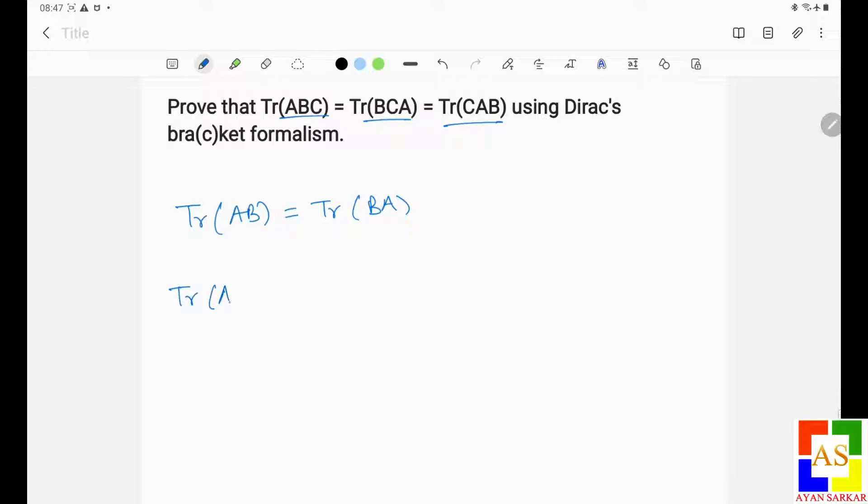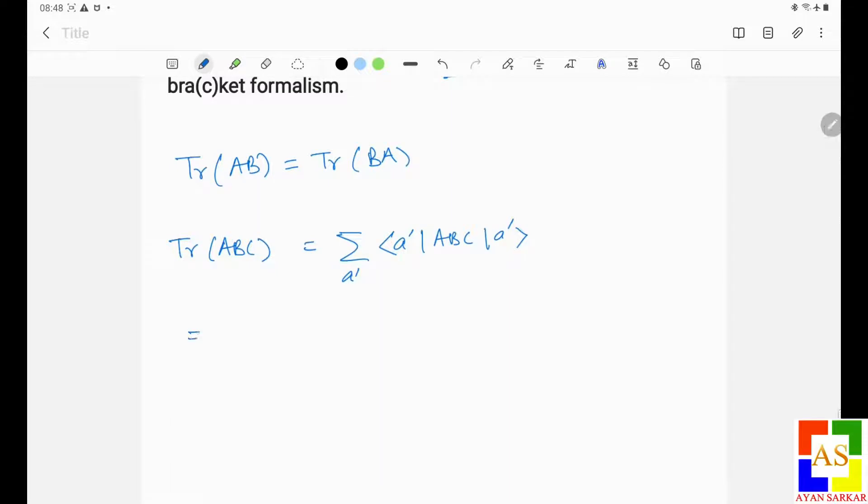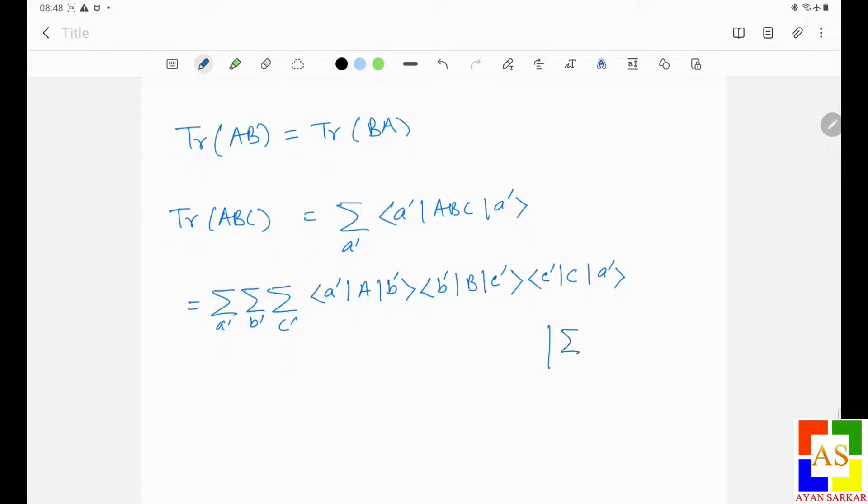So I can write trace ABC is equal to, in Dirac's notation I can write this. Okay fine, you know this. Now I can further write it as like this.